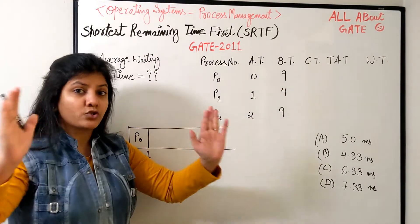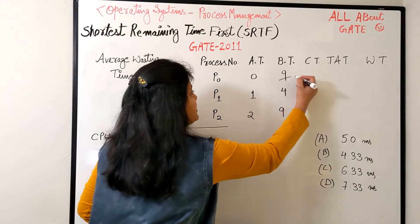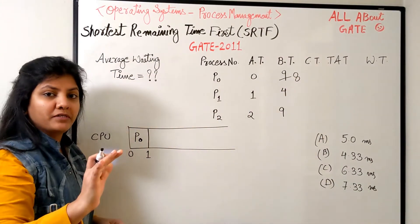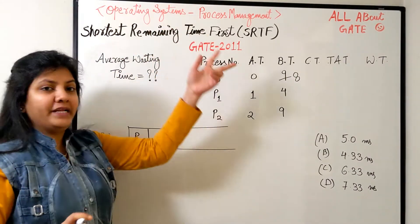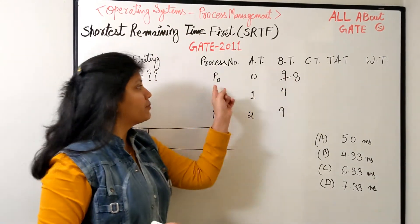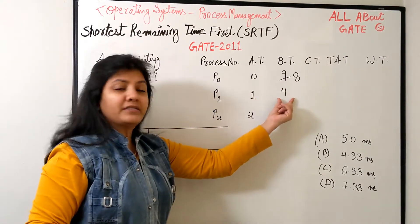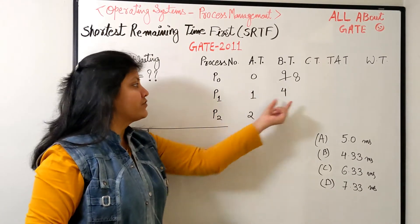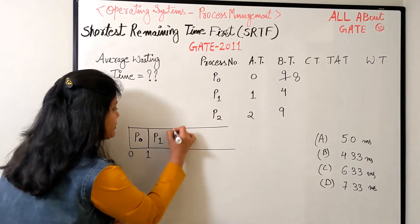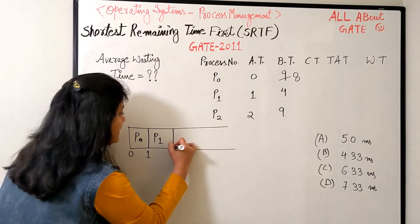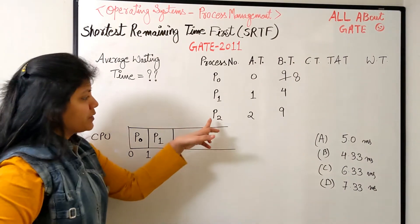P0 needed nine bursts, so by time 1 it finishes one burst and now needs eight more. Because the name is Shortest Remaining Time, what is the remaining time for P0? Eight. But at time 1, what is the burst time requirement for P1? Four - quite less than eight. So P1 is going to get scheduled next.